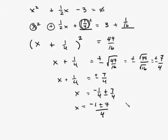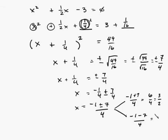When you get that, you're going to get two answers. You'll get negative 1 plus 7 over 4, and the other one's going to be negative 1 minus 7 over 4. And this is going to equal 6 fourths. Divide by 2 on top and bottom, and you get 3 halves. And this one's going to be negative 8 over 4, which equals negative 2. So your answers are x equals 3 halves or negative 2.